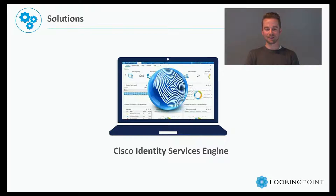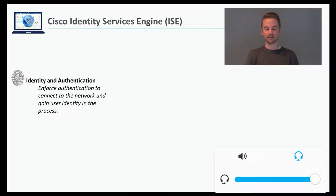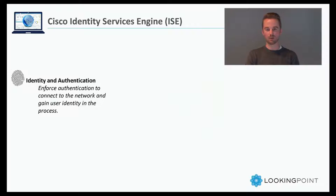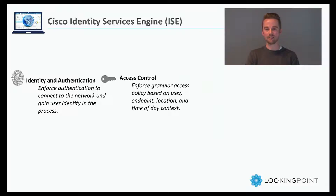Cisco ICE — what does it do? Well, first of all, ICE provides authentication for those devices and users connecting to the network, be it wired, wireless, or VPN. And then based on that authentication and additional context, we're able to gather what that user is able to do on the network. It's no longer just green light, red light. There's this in-between area based on what device the user's connecting from, what time of day it is, et cetera.